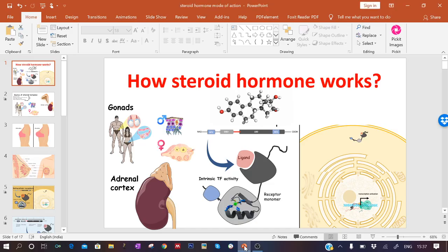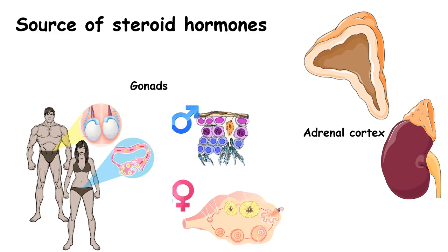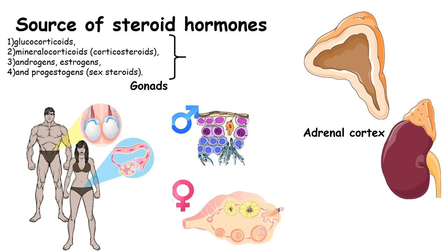Hi, in this video we would learn about how steroid hormones work. Steroid hormones are produced from the adrenal cortex or the gonads. The steroid hormones are generally glucocorticoids, mineralocorticoids, androgens, estrogens, progesterone, etc.